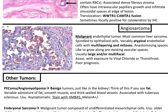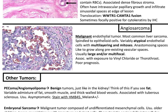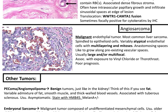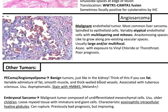Angiosarcoma. This is a malignant endothelial tumor and the most common liver sarcoma. Histologically, you'll have spindled to epithelioid cells, variably atypical endothelial cells with multilayering and mitoses, and anastomosing spaces. It's likely to grow along pre-existing vascular spaces, and is usually large and/or multifocal. It's associated with exposure to vinyl chloride. Embryonal sarcoma is a malignant tumor composed of undifferentiated mesenchymal cells, usually in older children. You'll have loose myxoid stroma with immature and giant cells, and characteristic eosinophilic intracellular hyaline globules. It can rupture; previously had bad prognosis but it is improving.